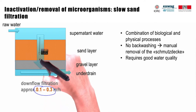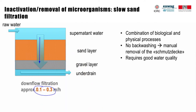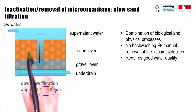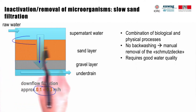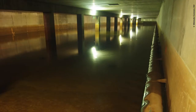Slow sand filters are usually downflow filters and are operated by gravity. Each filter requires a ripening period of a few days to a few weeks until removal rates stabilize. The top layer of the slow sand filter contains a diverse microbiological community and particles, and is called the schmutzdecke. In the schmutzdecke, inactivation of microorganisms predominantly occurs.